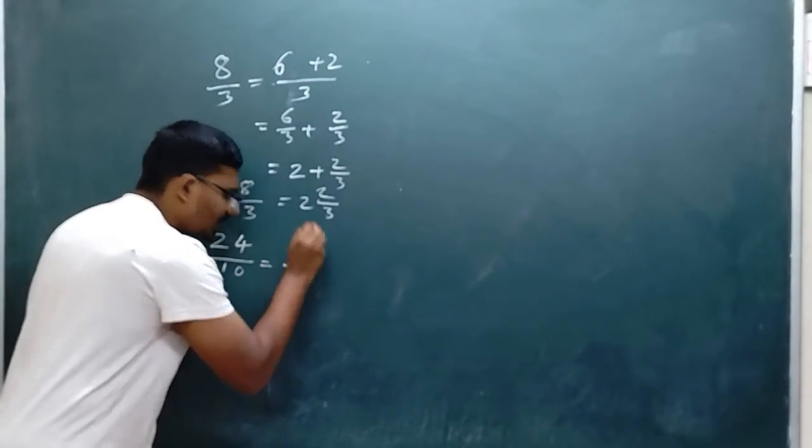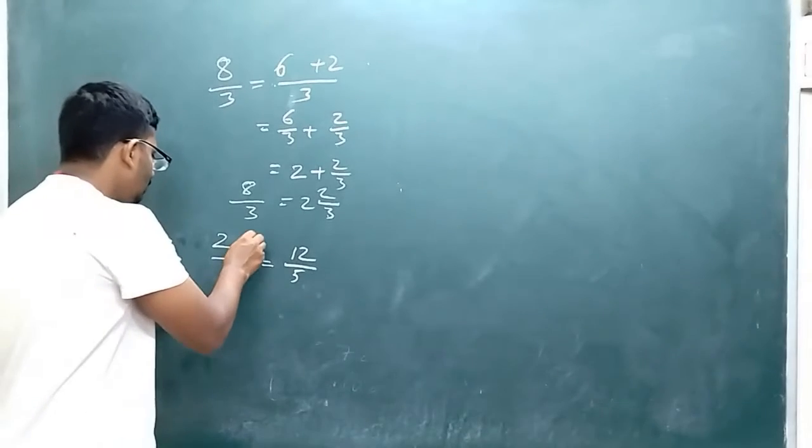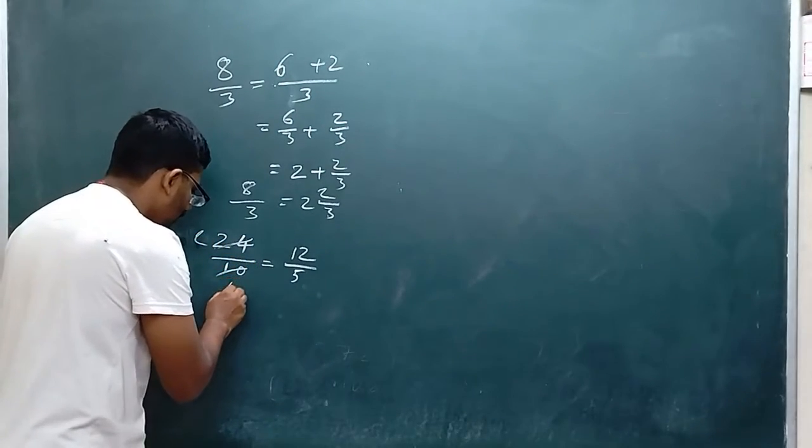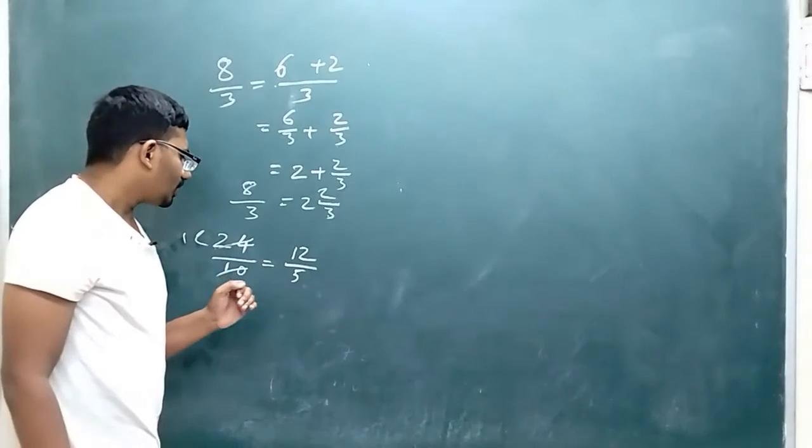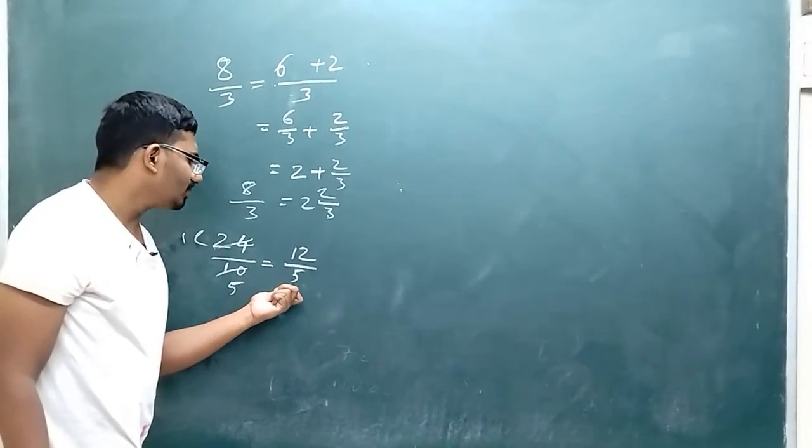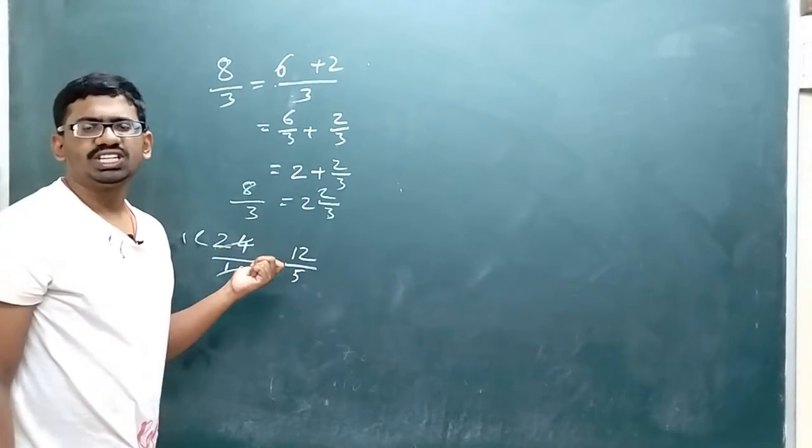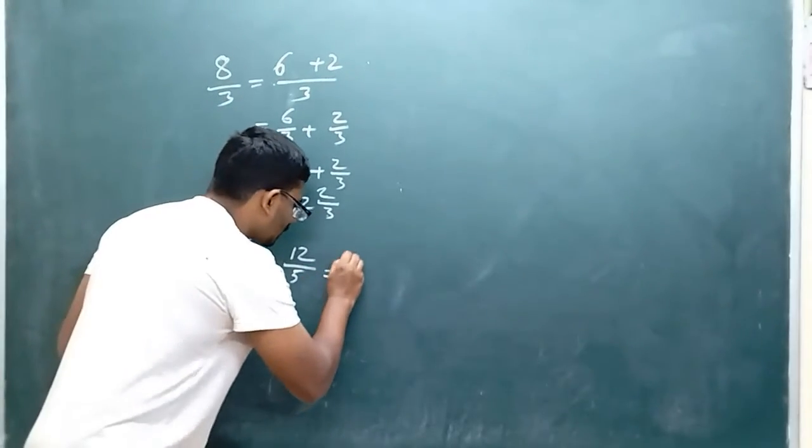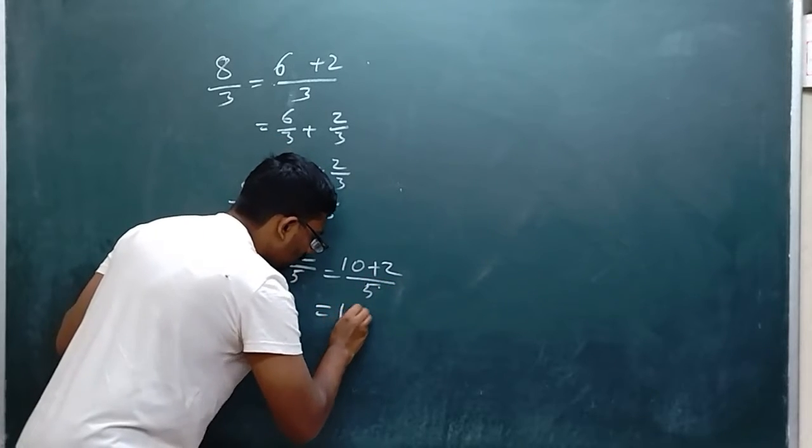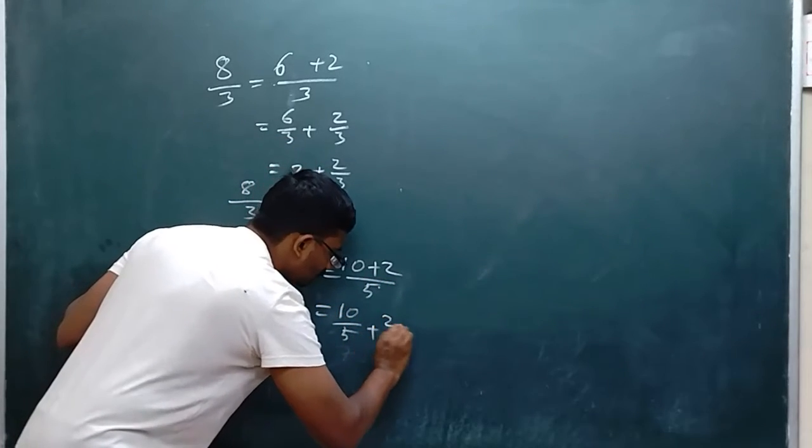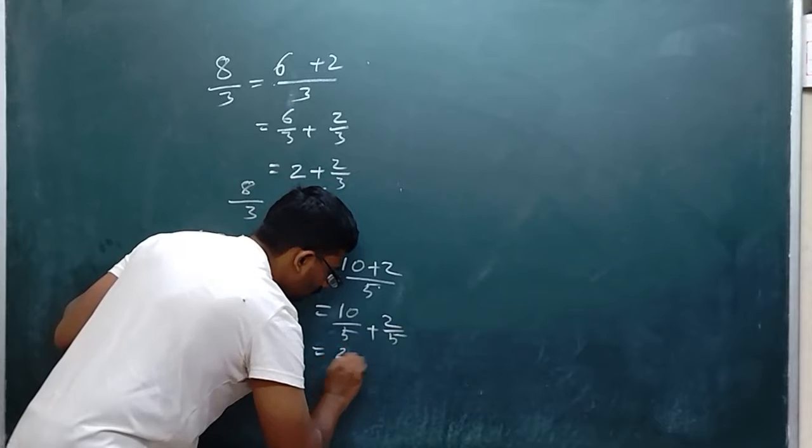Now check how many times 5 goes into 12. It is 2 times - 2 times 5 is 10. You can write it as 10 plus 2 divided by 5, so 10/5 plus 2/5, which equals 2 plus 2/5.